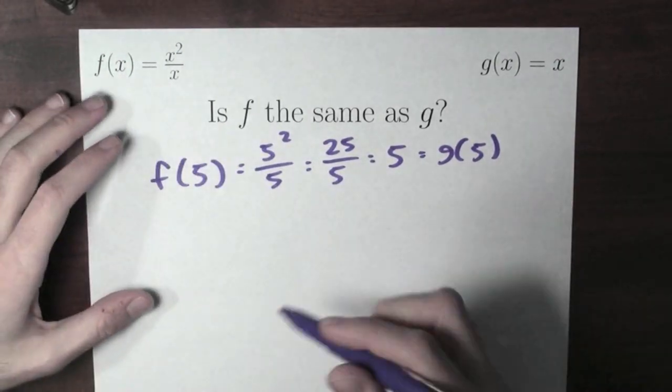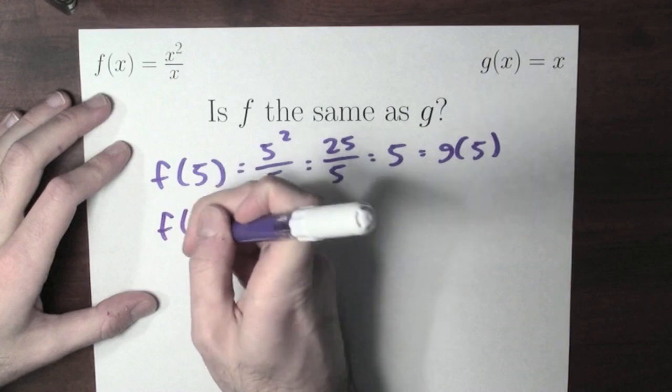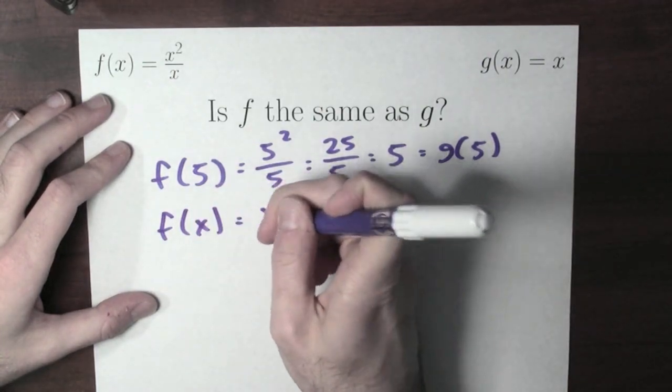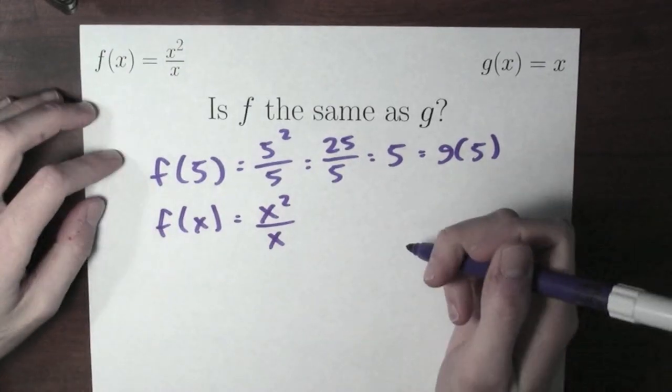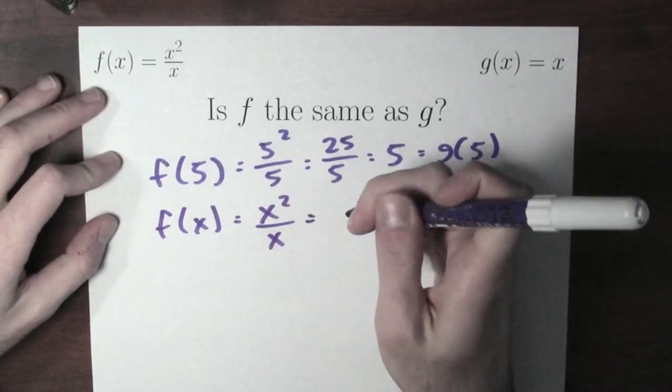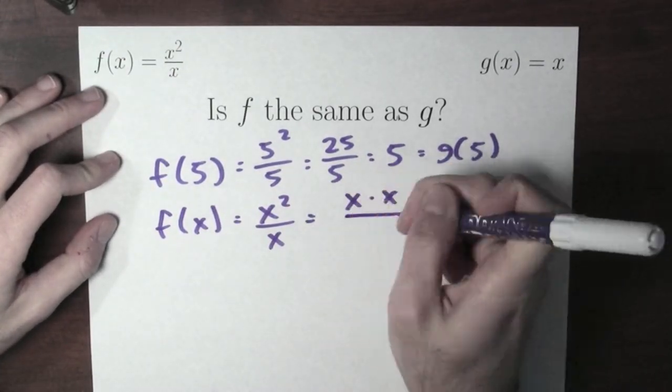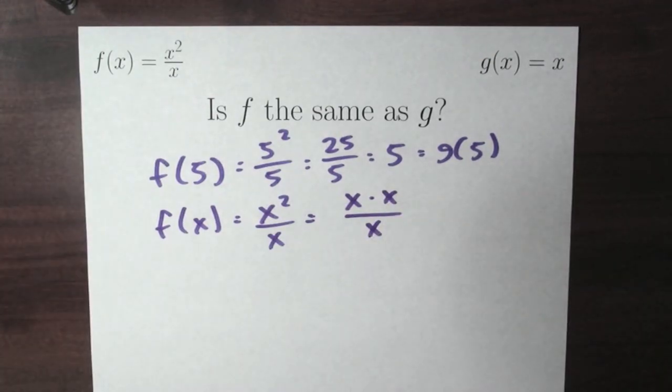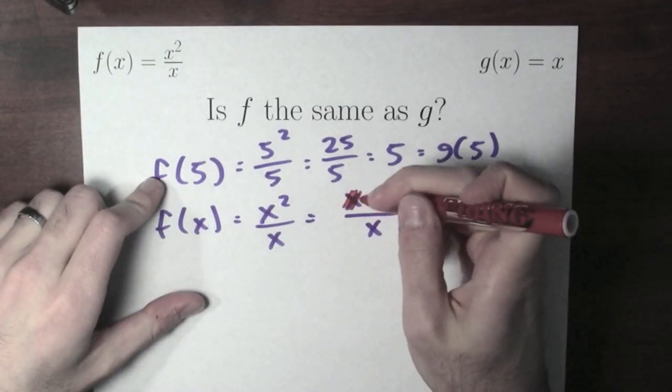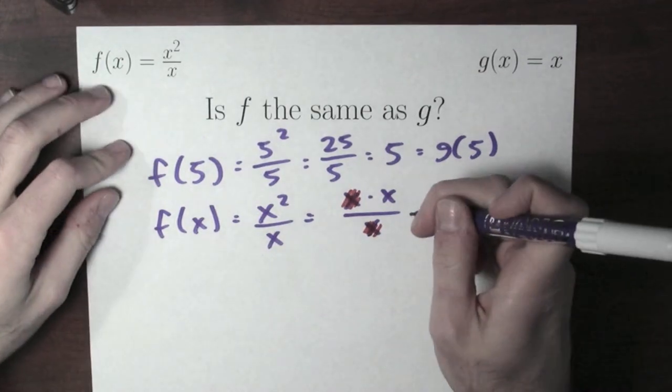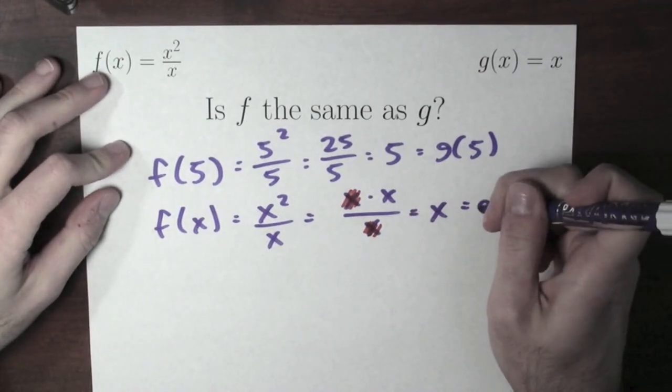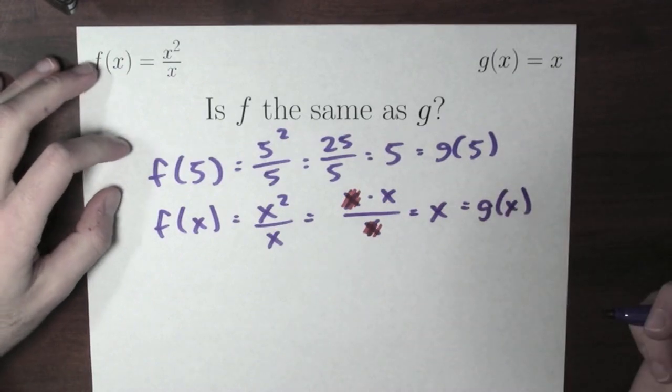You might think this always works, because of something like this. You might want to say, well, f of x, that's x squared over x, no matter what x is. You might rewrite this x squared as x times x over x. And then you'd be tempted to say, cancel one of these x's with the x in the denominator, and then you'd write equals x. And x, well, that's g of x.